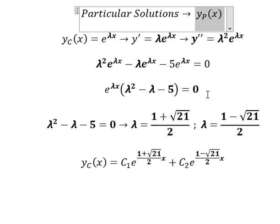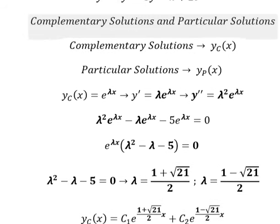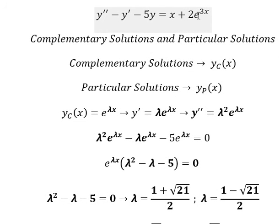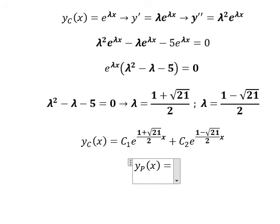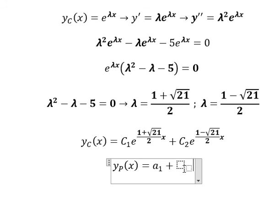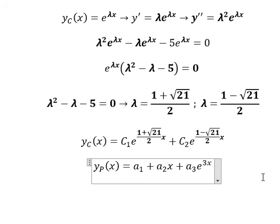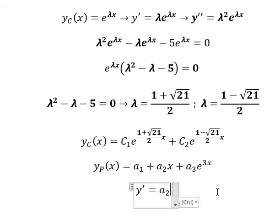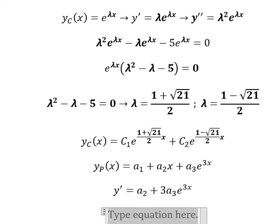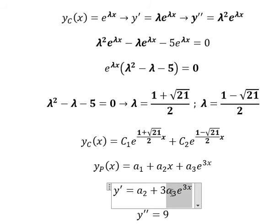Now we go to the particular solution. We see that we have s and e to the power of 3s on the right-hand side, so we set up y_p = a1 + a2*s + a3*e^(3s). Taking the first derivative gives a2 + 3*a3*e^(3s). The second derivative gives 9*a3*e^(3s).